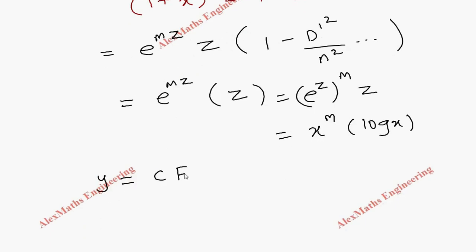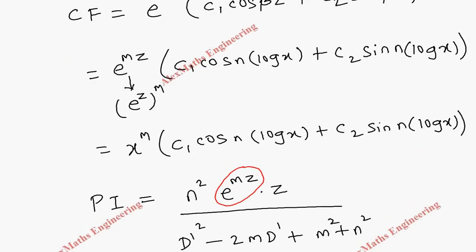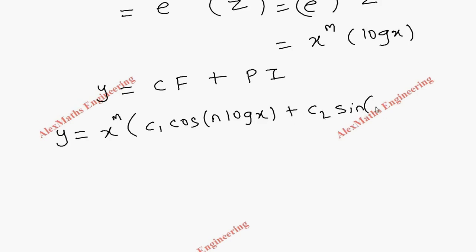Now y equals CF plus PI. The complementary function gives x power m into c1 cos of n log x plus c2 sin of n log x, and the particular integral adds x power m into log x. So the final answer is y equals x power m times c1 cos of n log x plus c2 sin of n log x plus x power m times log x.